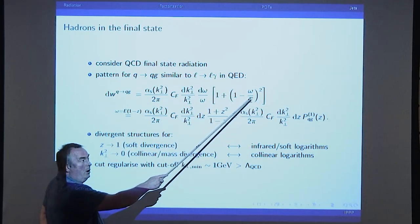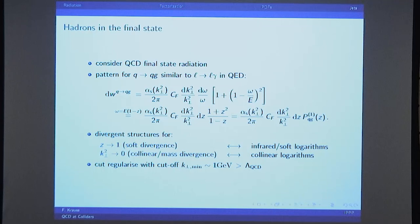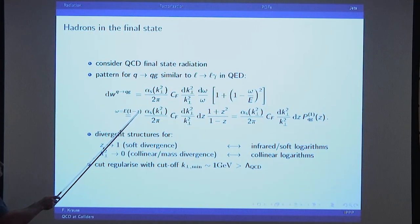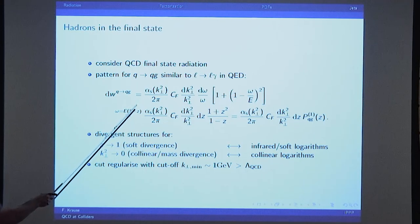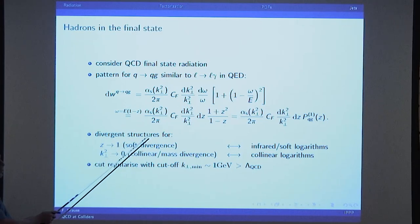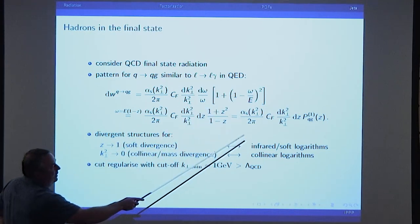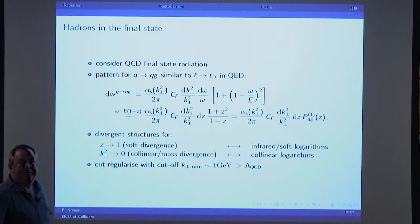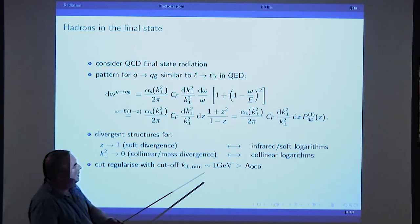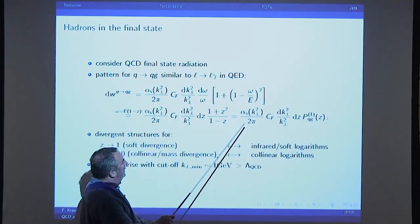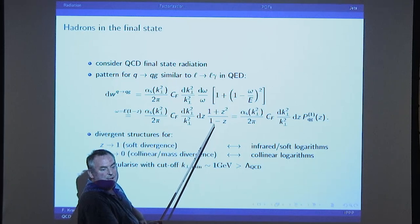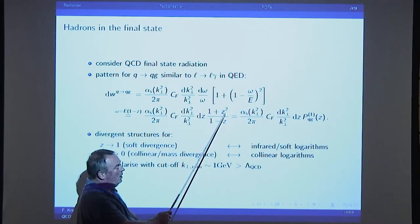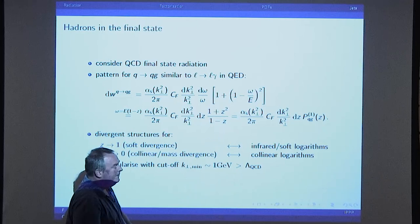This bit here comes because it's like the interaction with the magnetic moment. E is the energy of the quark, and ω is the gluon energy. If I write this with the parameter z, which is the energy of the quark after it emitted the gluon, you get this form — and this is exactly like the splitting function we had before. The splitting function for a scalar particle would just be something like 2/(1-z), but because it's a spin-1/2 particle, you get this extra term here.